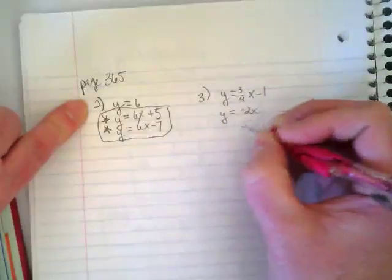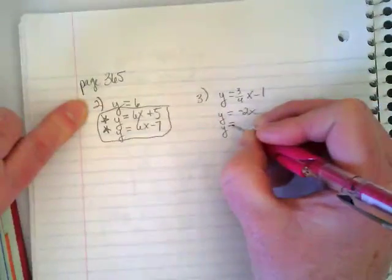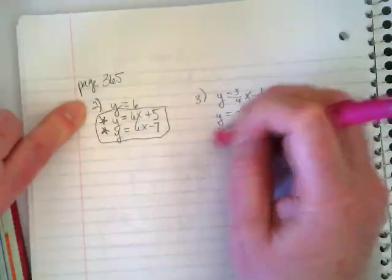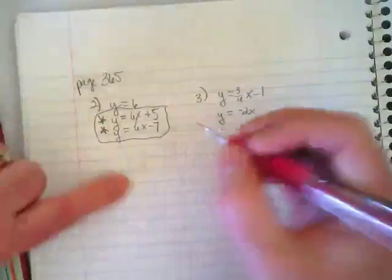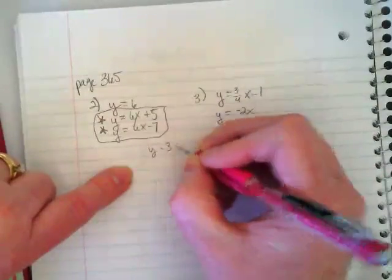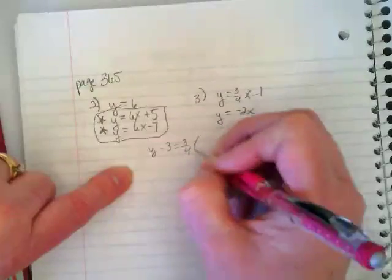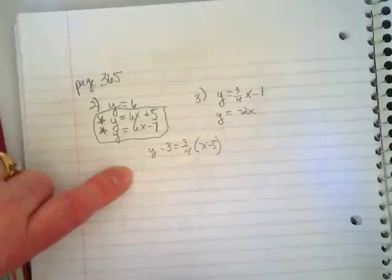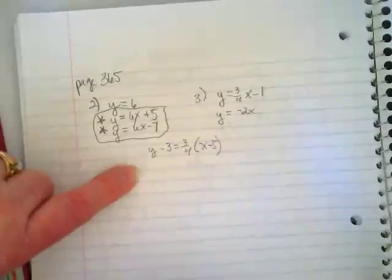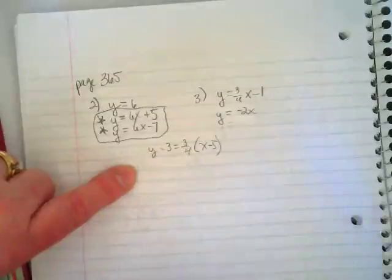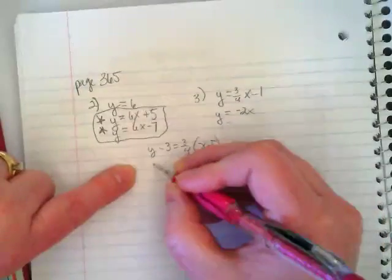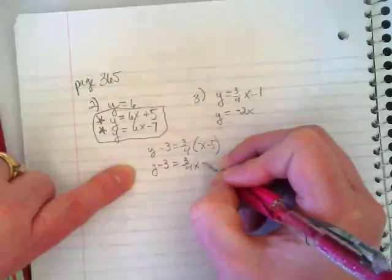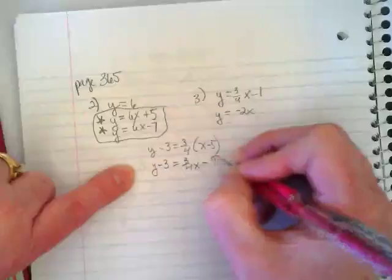Let's try number three. Y equals three-fourths X minus one. Y equals negative two X. Oh, nope. This one's not ready to go in there, is it? For number three, that third equation says Y minus three equals three-fourths times X minus five. I have to convert that before I can write it into my set, because right now it's in point-slope form.